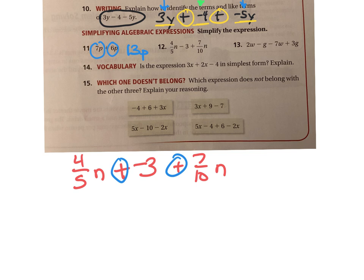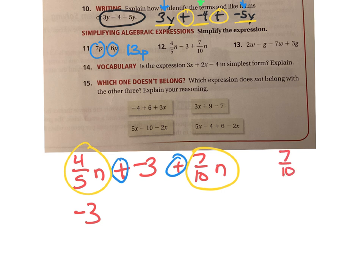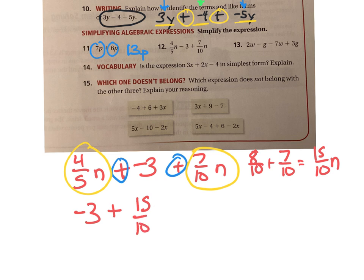The negative 3 is a constant, nothing like it, so I'm going to bring that down. Then I'm going to add my two like terms — these both have n. I need to change 4 fifths to 8 tenths so they share a denominator, and 7 tenths stays 7 tenths. When I add those together, I get 15 over 10 n. So the expression becomes negative 3 plus 15 tenths n.